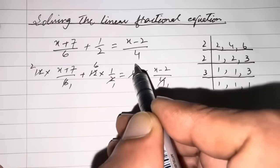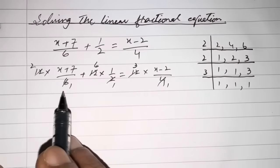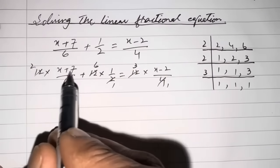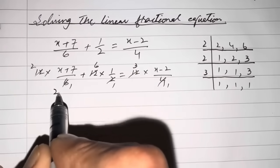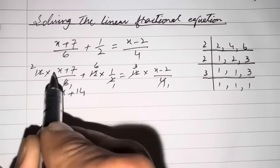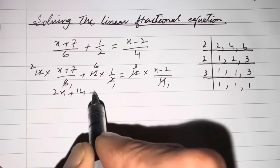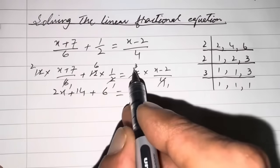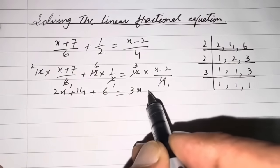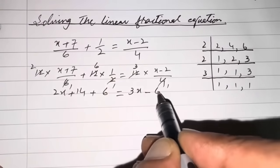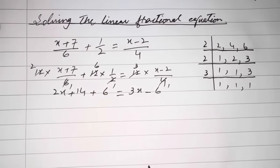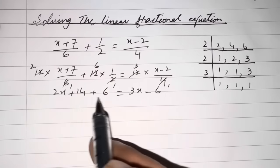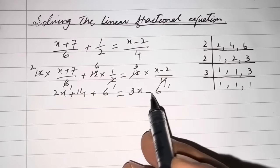Now multiply 2 with the terms, so the equation becomes 2x plus 14 plus 6 equals 3x minus 6, where 3 multiplies with the x terms. The equation has become in its simplest form: 2x plus 14 plus 6 equals 3x minus 6.